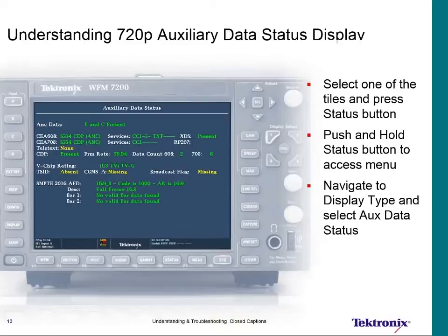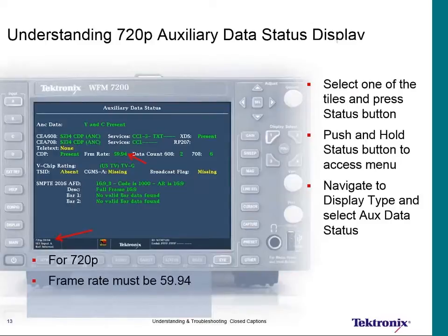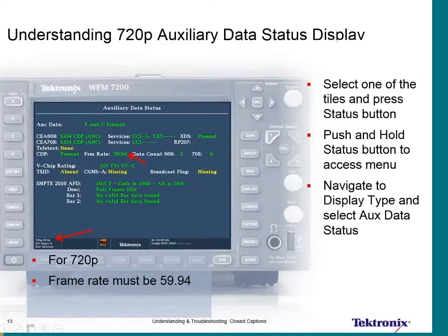Looking at this stream, here are things to verify whether you're a 720 or 1080 house. For a 720 house, first verify that the ancillary data frame rate is set correctly. On the CDP it says 'present' and then shows 'frame rate.' The correct frame rate for 720p is 5994. That data is not read off the SDI — it's read out of the caption data packet being inserted in the transport stream. We need to make sure the correct amount of data is being presented.